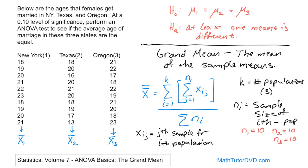For example, X sub 1,1 — from population 1, sample number 1 — is 18. X sub 2,1 — from the second population, sample number 1 — is also 18. And X sub 3,1 — from the third population, sample number 1 — is 21. The first subscript is the population, the second is the sample number. So with I equal to 1 and j running from 1 to 10, the sigma adds up all the values from population number 1.